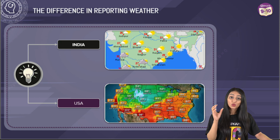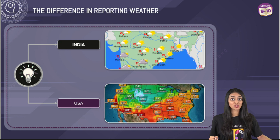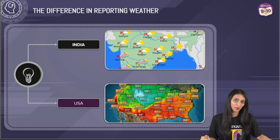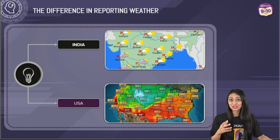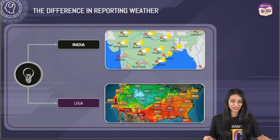Actually, USA uses the Fahrenheit scale to measure temperature, whereas we in India use the Celsius scale. Now let's see how we got these two scales and how linear equations helped us in resolving this confusion.